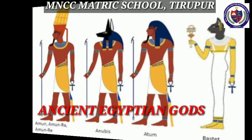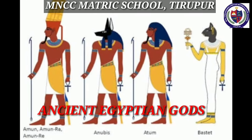Next, religion. The Egyptians practiced polytheism. Amon-Ra, Sekhmet, Horus, and Anubis were some of the gods of the Egyptians.